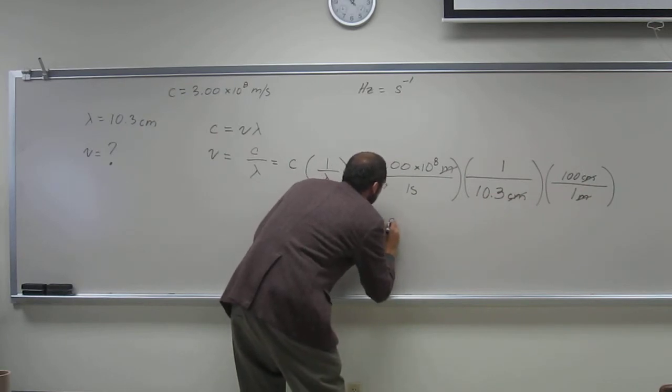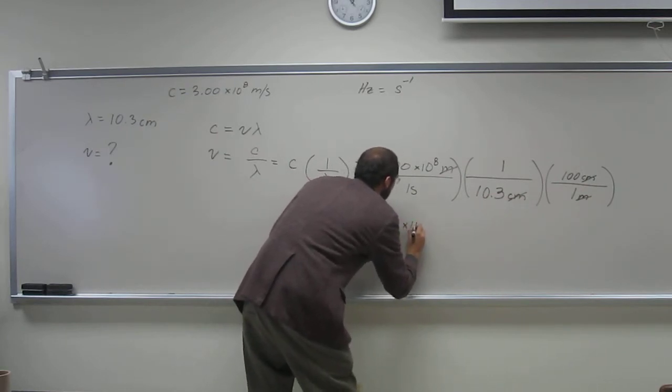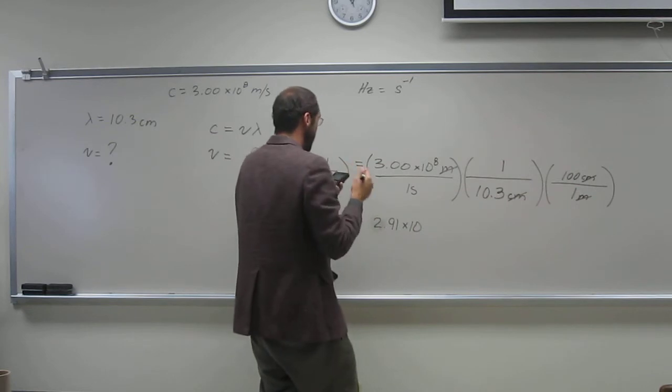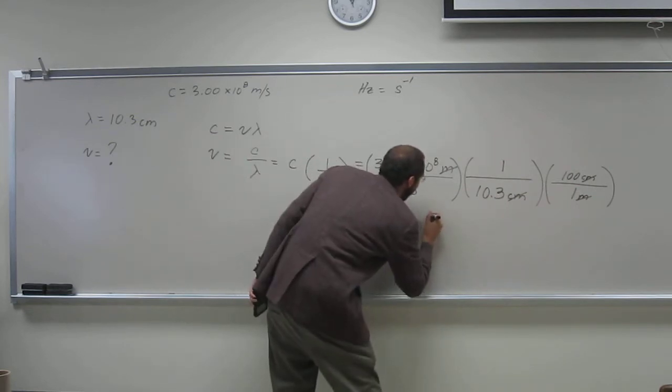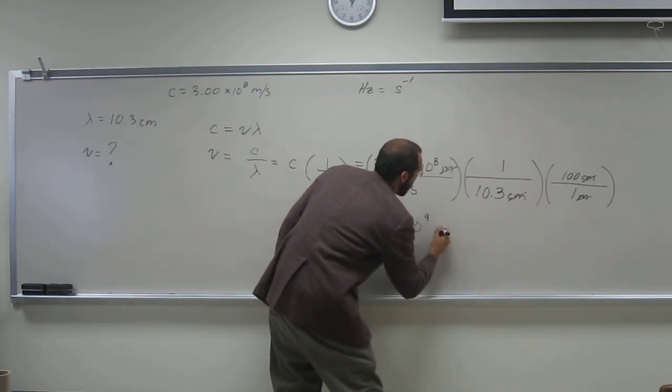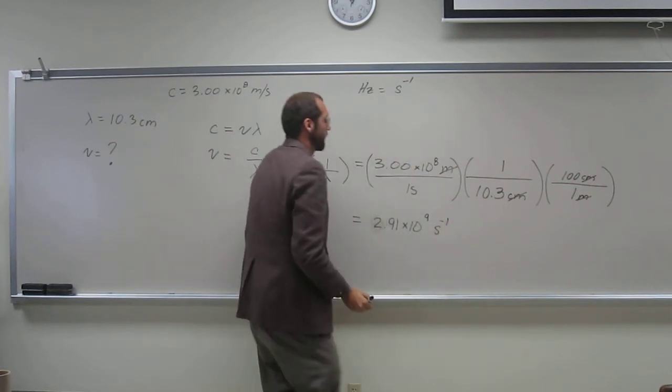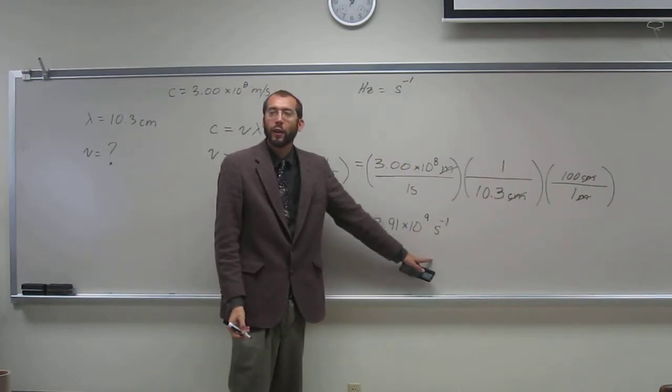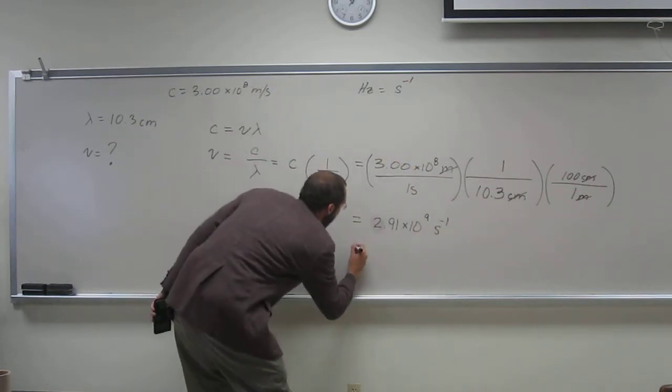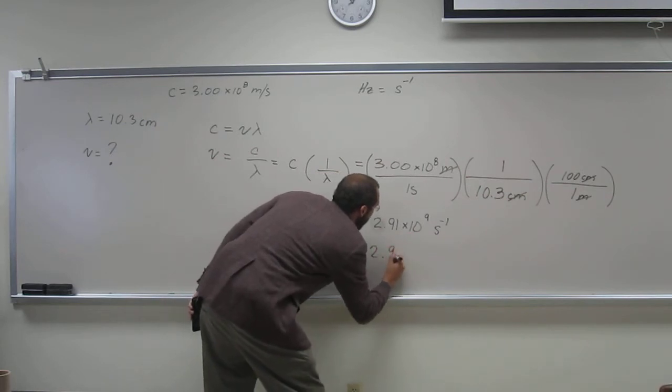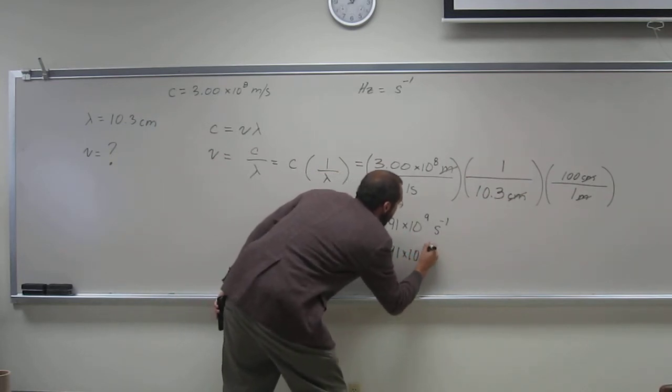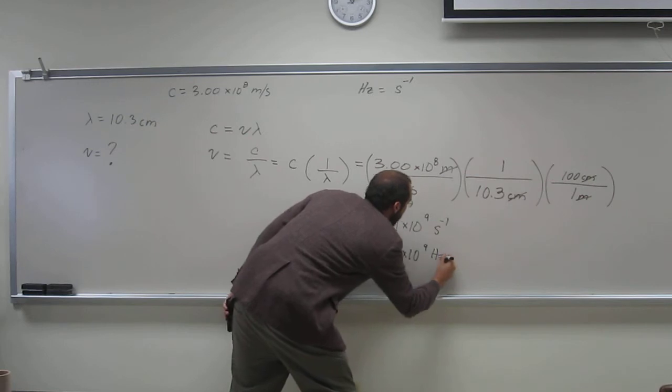So, 2.91 times 10 to the 9th per second. Okay, and remember again, per second is just the hertz. So, 2.91 times 10 to the 9th per second.